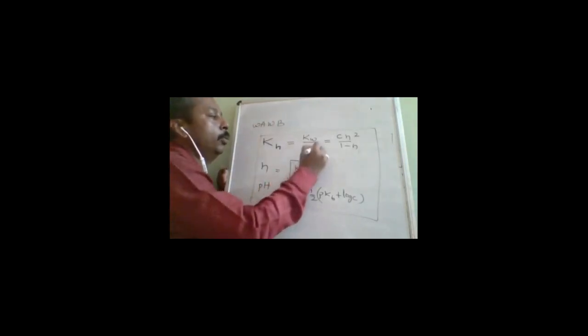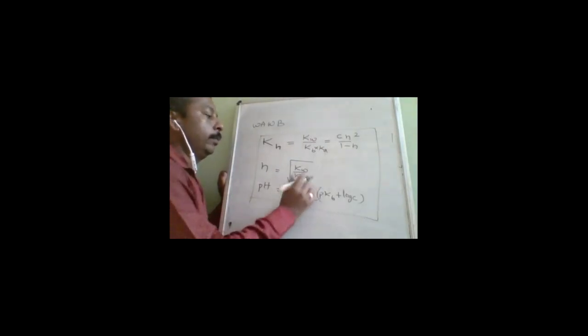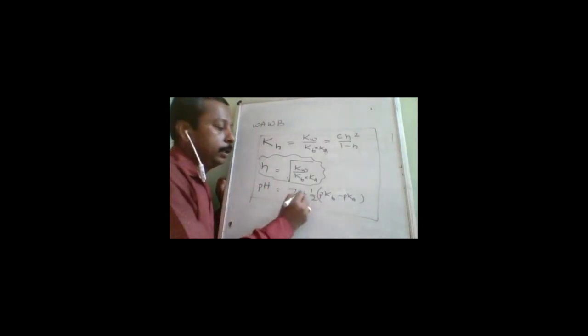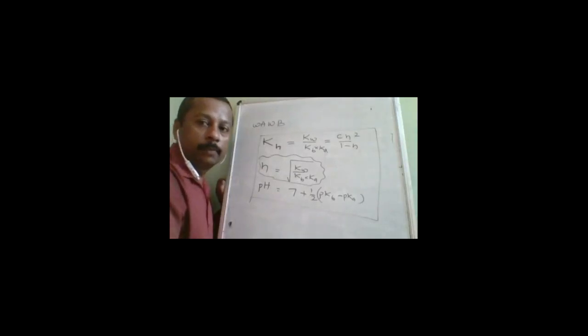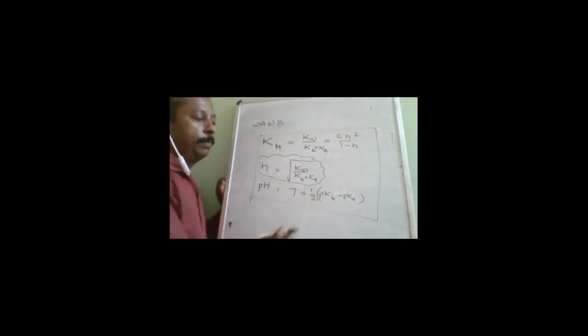For salt of weak acid and weak base (WA+WB): Kh = Ka·Kb / Kw. An important point — there is no concentration term in the pH formula for this type. The pH formula is: pH = 7 + ½·pKa − ½·pKb. The acid reduces pH (pKa is negative) and base increases pH (pKb is positive).